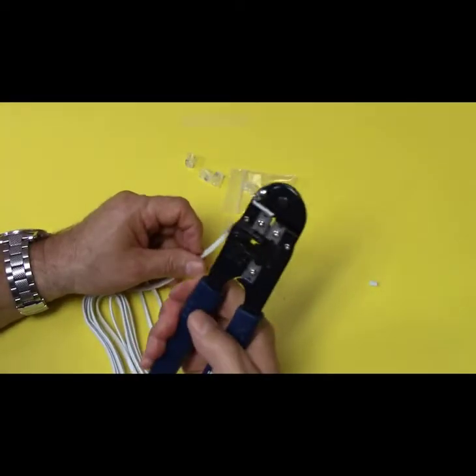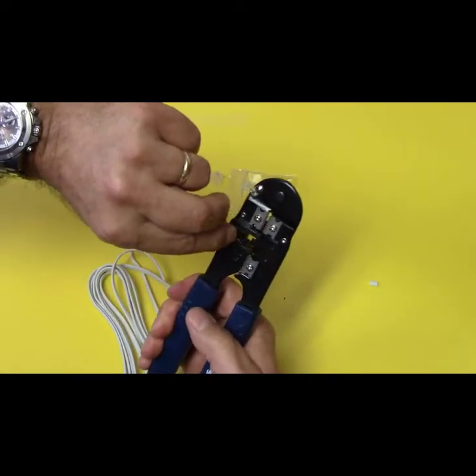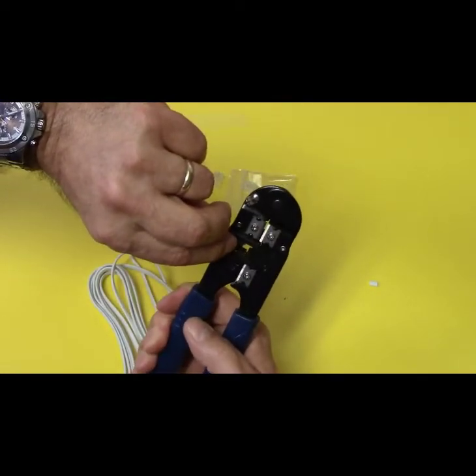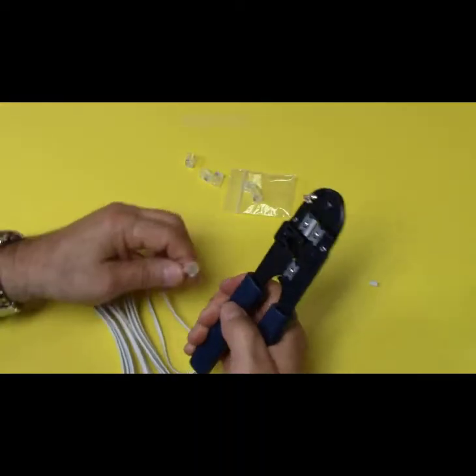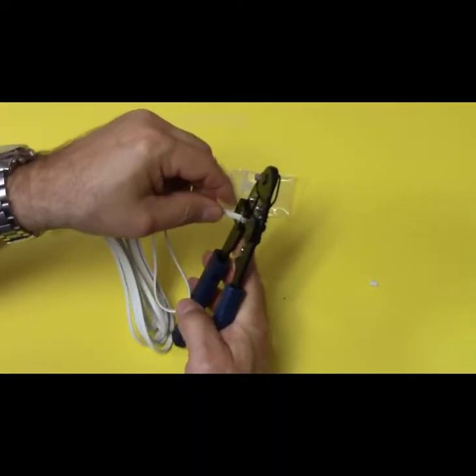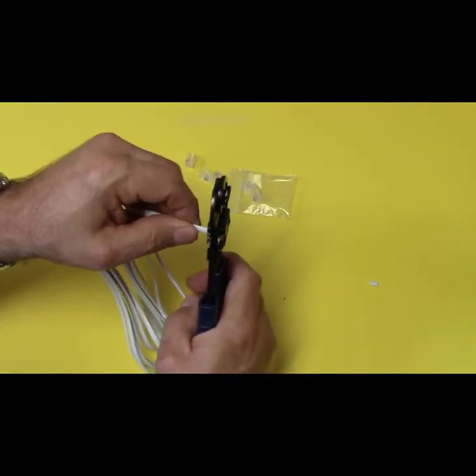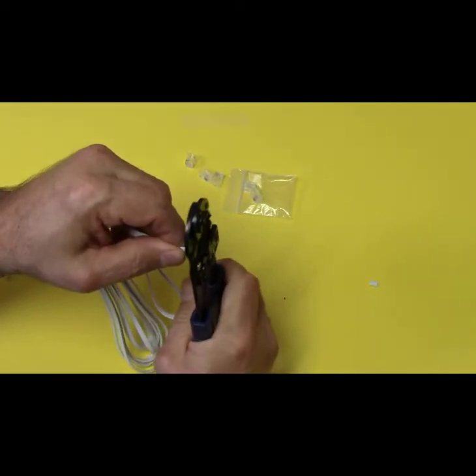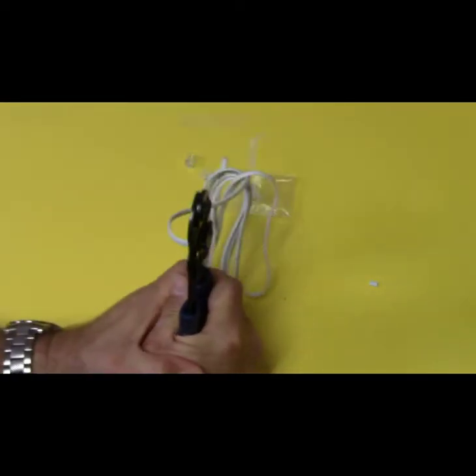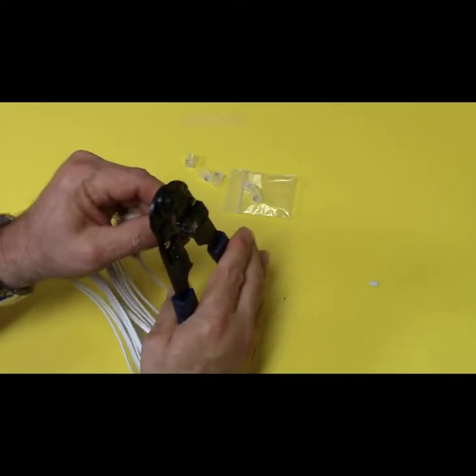Now we're going to take our crimper part of the tool, and that's right here. And if you look, it's got the little indent for the tab to go into. So we're going to open these up, we're going to slide the connector in. You hear that little click, and then we're going to squeeze. You're going to hear a little sound, so listen real close. I don't know if you heard that, but that was the connector pushing in.